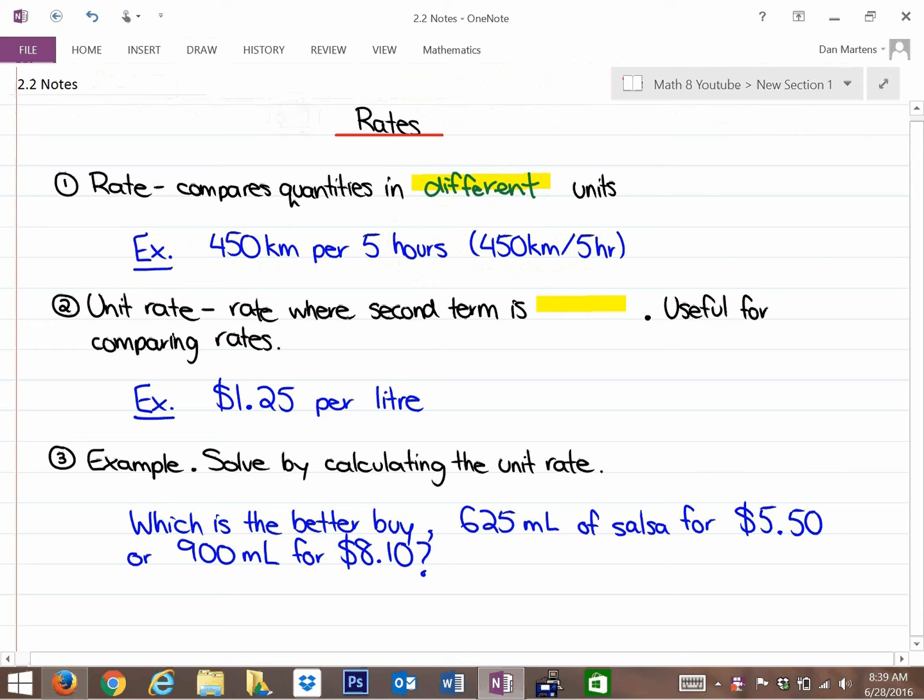Dollars per hour is a type of rate that you see in the way you get paid on the job. You get dollars per hour. There's a variety of different types of rates that you can deal with and that we're looking at in this particular section.